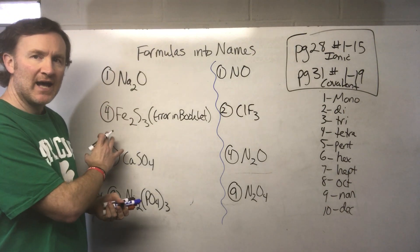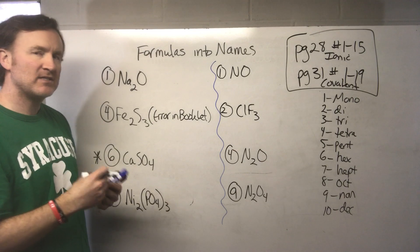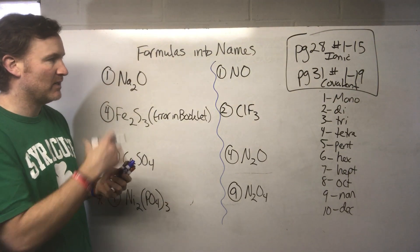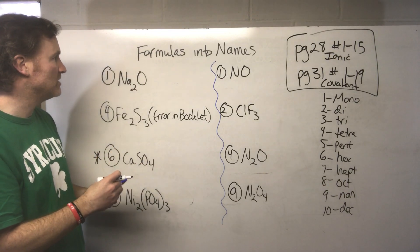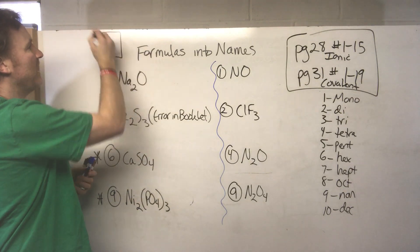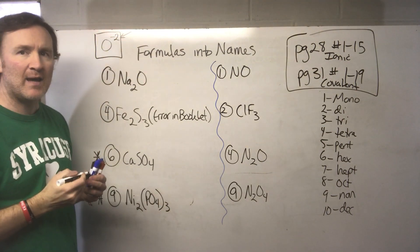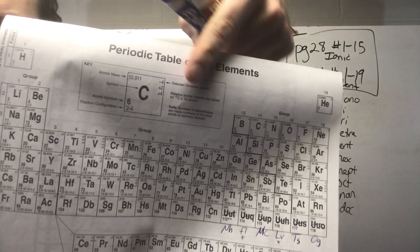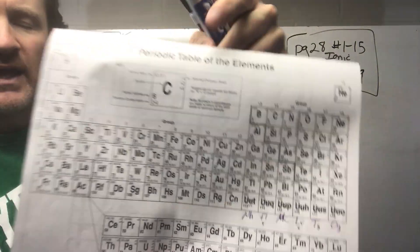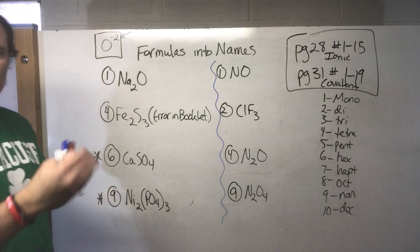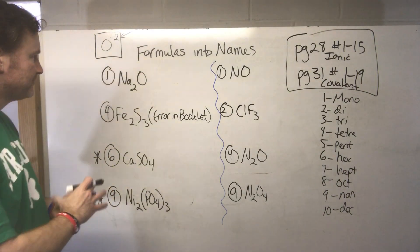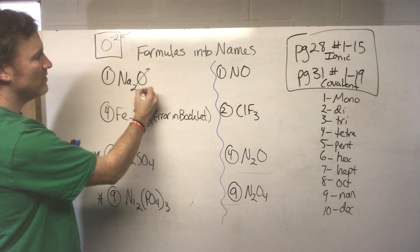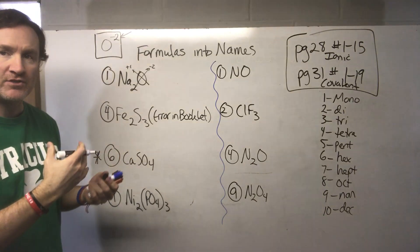For ionic naming we're going to use the reverse crisscross method. Some of these may need the stock system, so we need to look at oxidation numbers. As a reminder, the oxidation number is found in the top right of each element's box in the reference table — for example, oxygen is minus two. These numbers relate to how many electrons in a bond are either gained or lost to form a positive or negative charge.